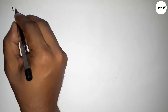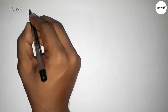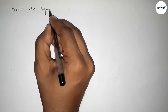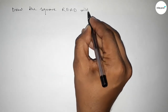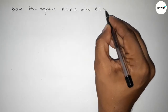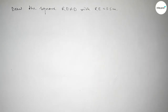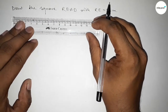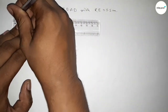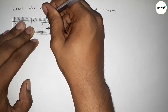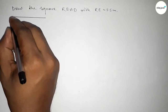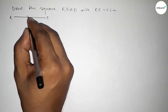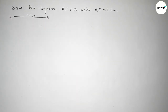Hi everyone, welcome to SI Share Classes. Today in this video we have to construct a square READ with RE equal to 5.5 centimeters. So let's start the video. First of all, we have to draw a line of length 5.5 centimeters. This is the 5.5 centimeter line, so this is RE, 5.5 centimeters.